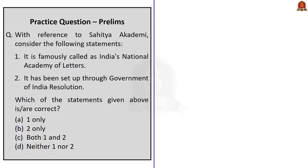The final question: 'With reference to Sahitya Akademi, consider the following statements — Statement 1: It is famously called India's National Academy of Letters. Statement 2: It has been set up through a Government of India Resolution.' Options: A — 1 only; B — 2 only; C — both 1 and 2; D — neither 1 nor 2. Both statements are correct. If you had no prior exposure, you might think Statement 2 is wrong — but it was indeed set up by a Government of India resolution, and it is famously called the National Academy of Letters. The correct answer is Option C: both 1 and 2.